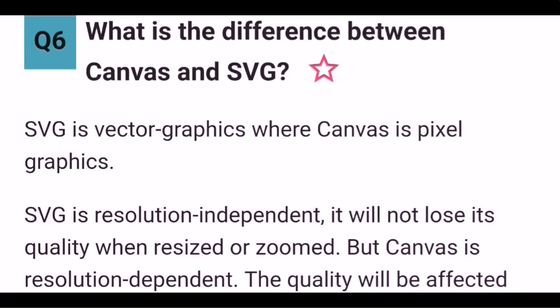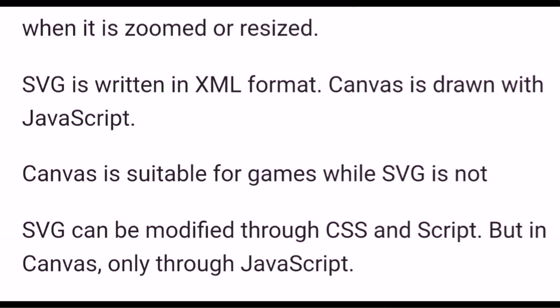What is the difference between Canvas and SVG? SVG is vector graphics while Canvas is pixel graphics. SVG is resolution independent and will not lose quality when resized or zoomed. Canvas is resolution dependent and quality is affected when zoomed or resized. SVG is written in XML format while Canvas is drawn with JavaScript. Canvas is suitable for games while SVG is not. SVG can be modified through CSS or JavaScript, but Canvas only through JavaScript.